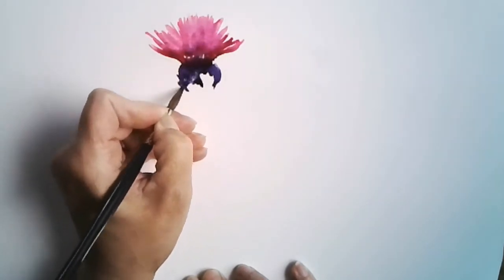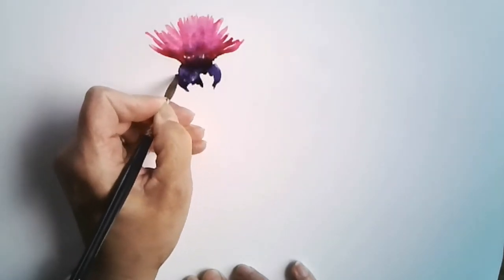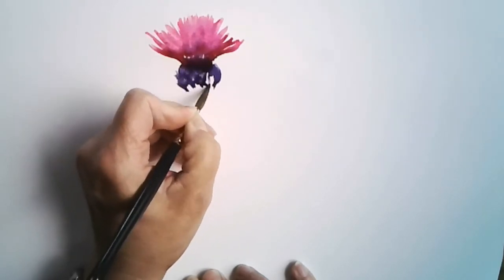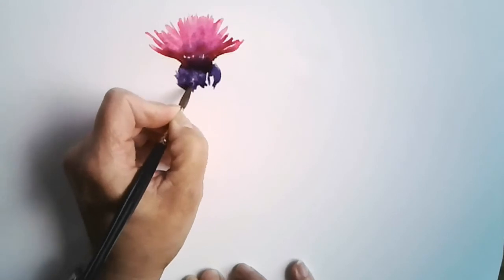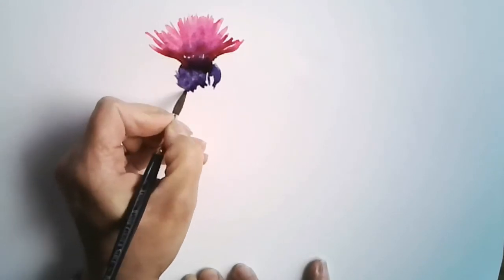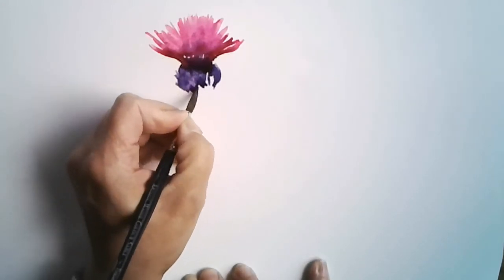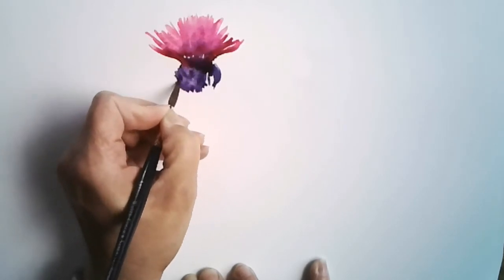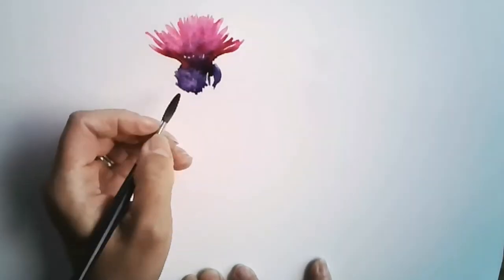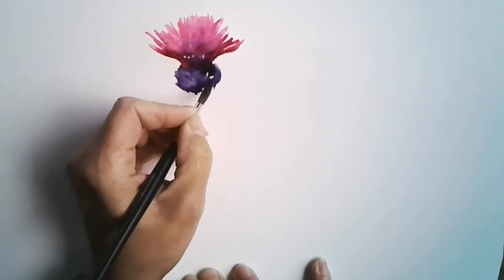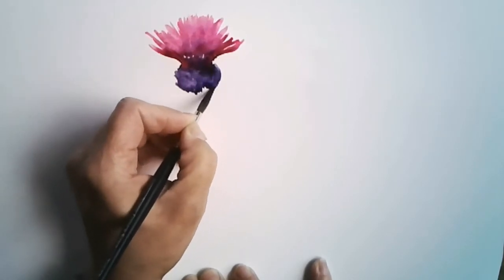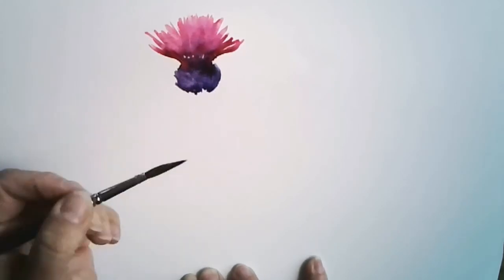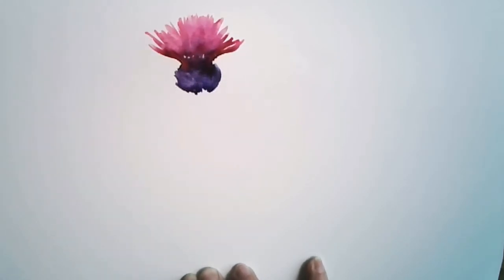And then what I want to do is I'm just going to scribble and flick a little bit because there's lots of broken textures that we can see on the thistle. Like that. So I'm getting this really lovely shape. Oh, look at the beautiful way it's running down. That's great.